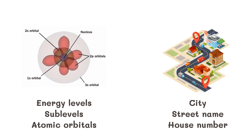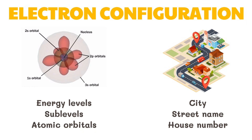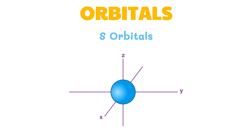In order to track where all the electrons in an atom are, chemists use notations called electron configuration. This electron configuration is the most stable arrangement in which the electrons have the lowest energy. An s orbital is spherical in shape. As the wave function suggests, there is a 90% probability of finding an electron within the sphere, except at its center where the nucleus is found.